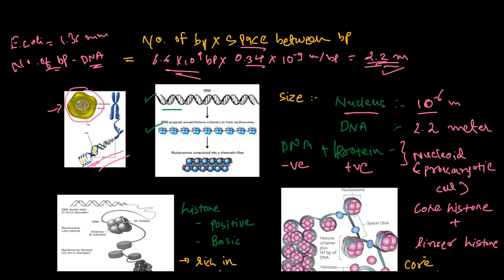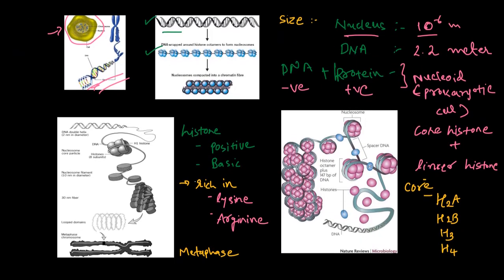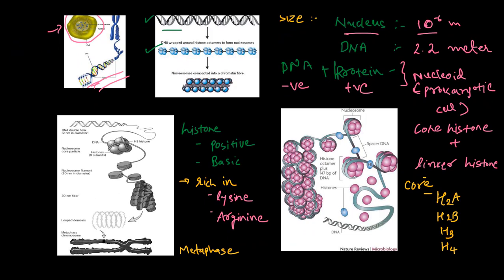In eukaryotes, the organization is much more complex than in the prokaryotic cell. It requires a set of positively charged basic proteins called histone proteins. In eukaryotic organisms, the DNA is held with histone proteins. These proteins are made up of amino acids whose side chains contain a basic charge.